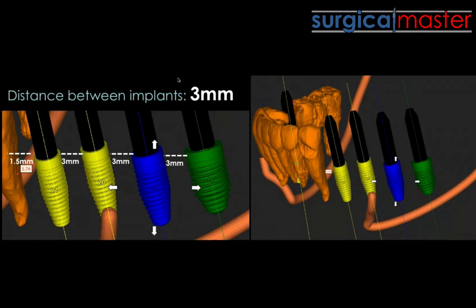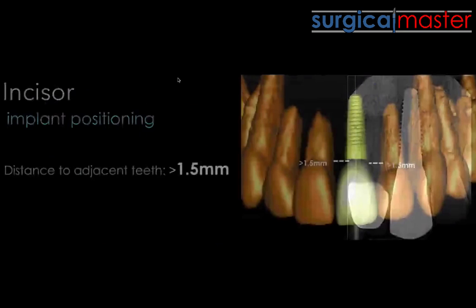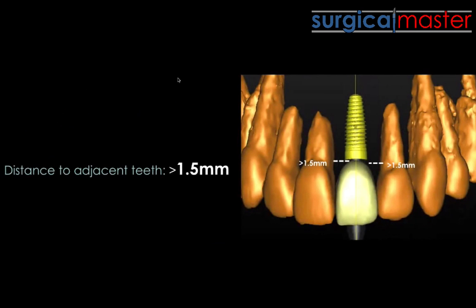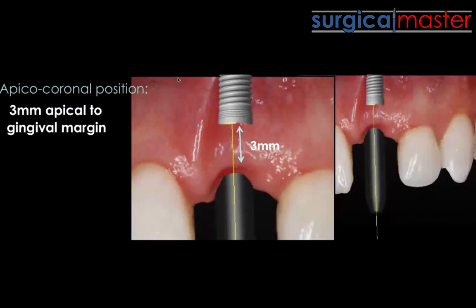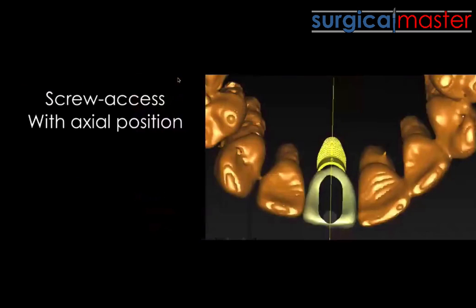In the aesthetic zone it's even more critical. The 1.5 millimeter rule still applies, but you don't have as much leeway. For a lateral incisor with six millimeters of bone, you immediately run out of space — many times we actually have to go closer than 1.5 millimeters, unless we use a three millimeter diameter implant. The buccal bone still needs to be at least two millimeters for stability. Most critical is the apical-coronal position: you need to be about three millimeters apical to the ideal gingival margin to allow proper emergence profile.